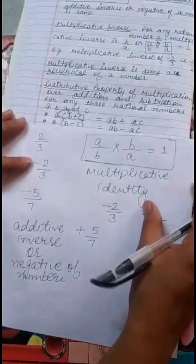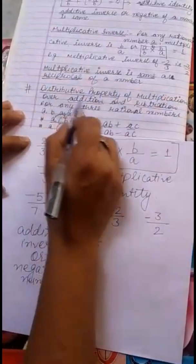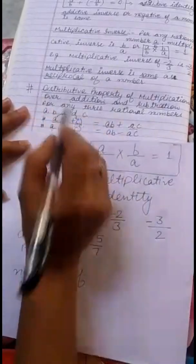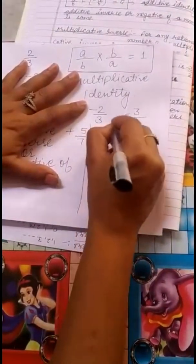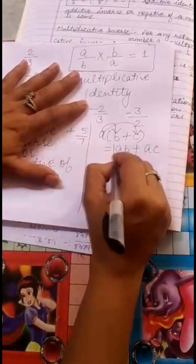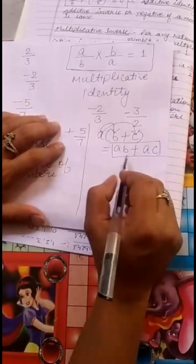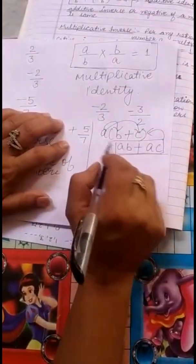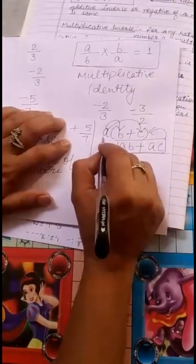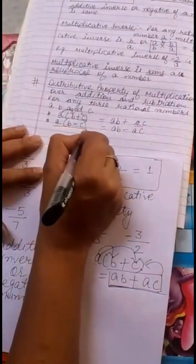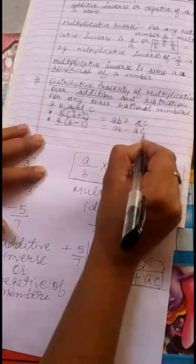The last property of this topic is Distributive Property of multiplication over addition and subtraction. For any three rational numbers a, b, and c: a into (b plus c) is equal to a·b plus a·c. This is called distributive property. The question can be in any form — it may be in the form of a·b plus a·c, which you can convert to a into (b plus c), or vice versa. Similarly, for subtraction: a into (b minus c) is equal to a·b minus a·c.